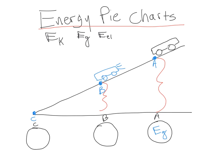Now, the question becomes how much of our pie should be which kind of energy? Well, if it's about halfway down the ramp, it's lost about half of its height originally. That means about half of the gravitational energy it had at the beginning is now gone and has become kinetic energy. So how are we going to show that in the pie chart? I would split it in half and say that we still have half of the gravitational that we had at the beginning, but now half of what we had in gravitational has become kinetic. The energy has changed from all gravitational to now some of it is kinetic.